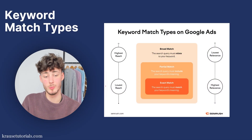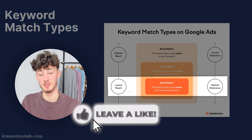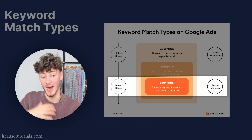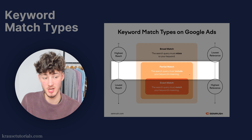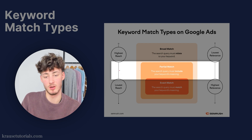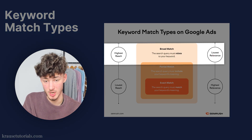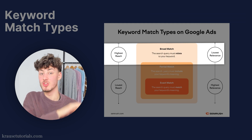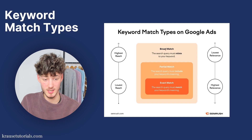Exact match gives you low reach but the highest possible relevance. Phrase match gives you mid-high relevance and a mid-low reach. Broad match has the lowest relevance but the highest reach. We are not going to use broad match at all — let me explain why.